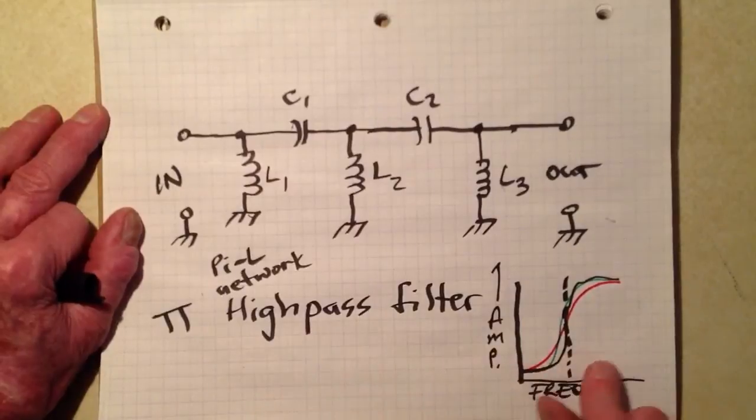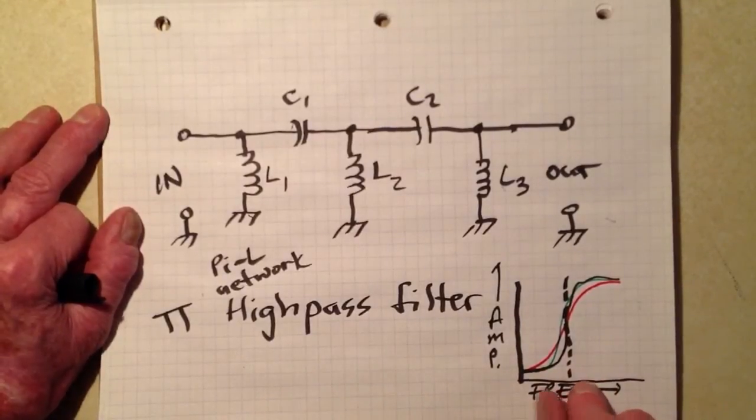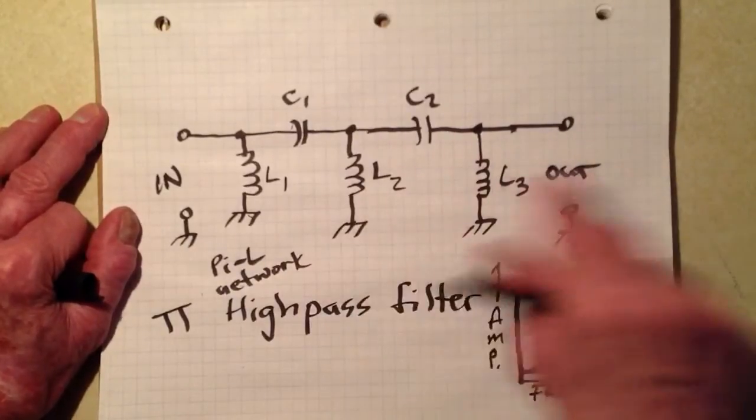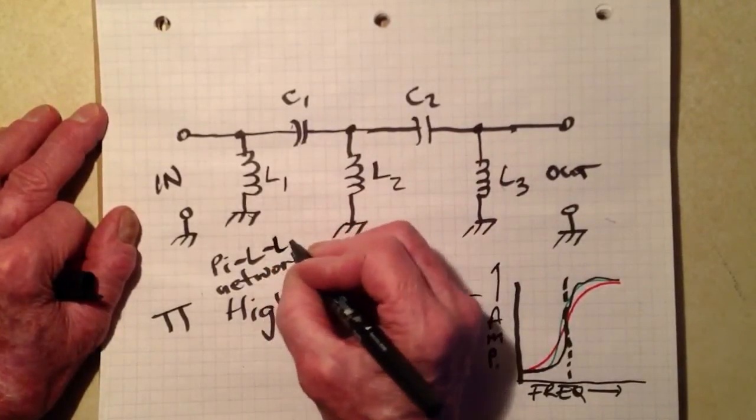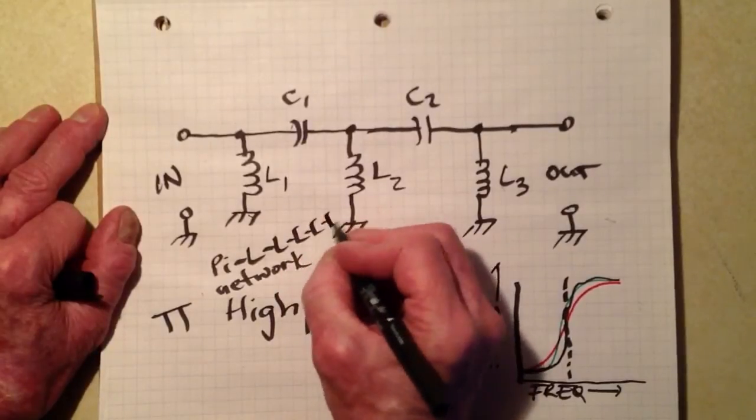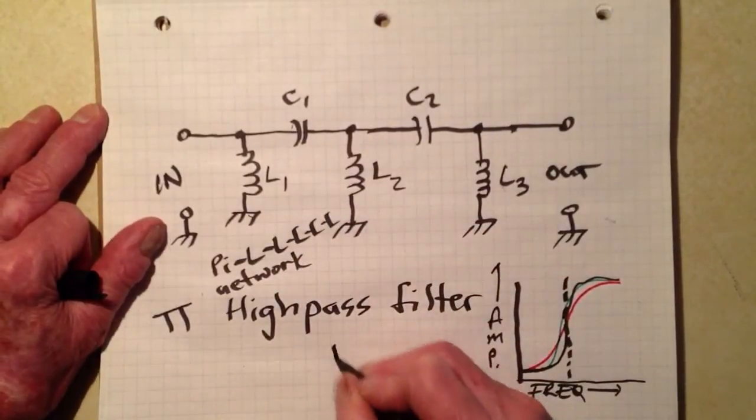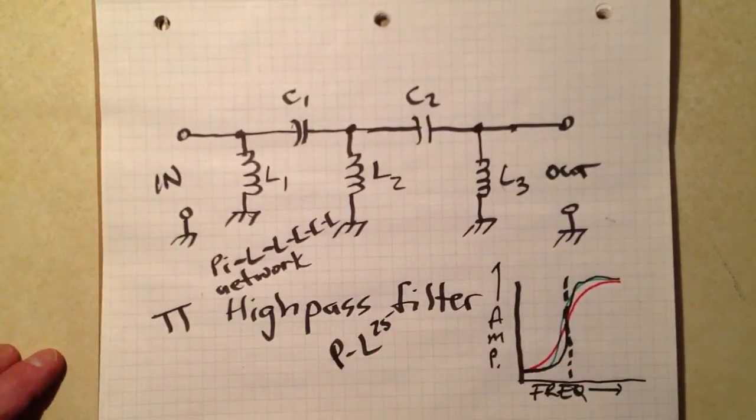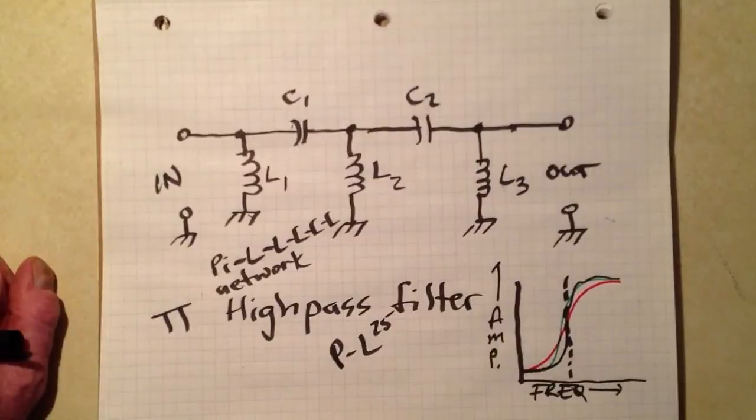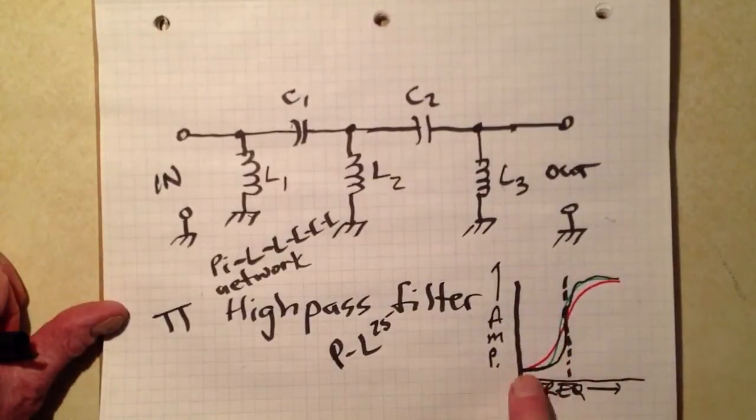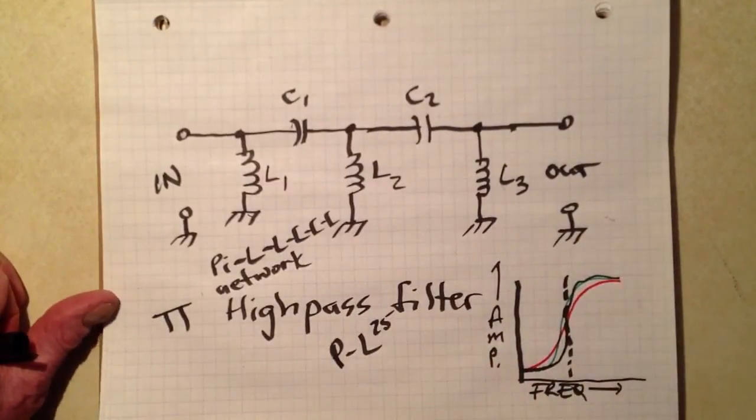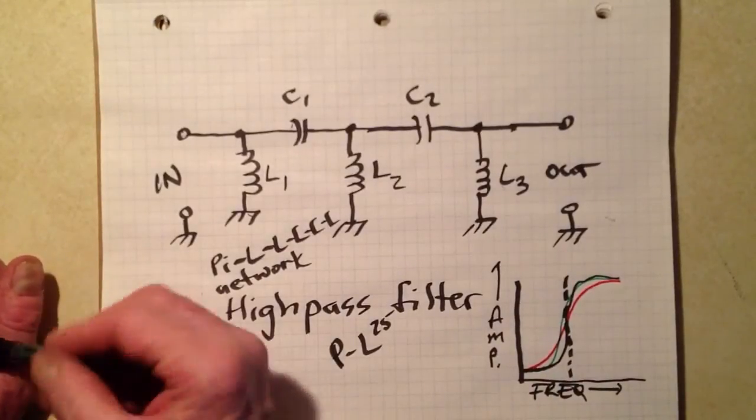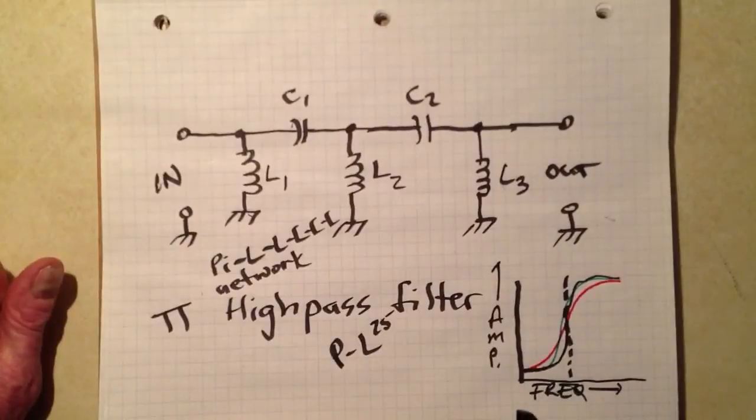As before with the low-pass filter, if you keep cascading more and more of these, if you just keep adding L's onto it, you might call it a pi L to the 25th power network. You could go on and on and on and expect, hopefully you're going to get a perfect cutoff like that. It's not going to happen. You're going to approach it, but you're never really going to get all the way there. In fact, if you keep doing that, you're just going to be wasting your money.